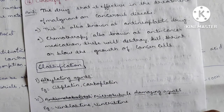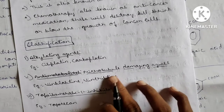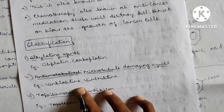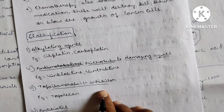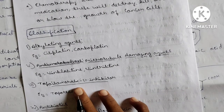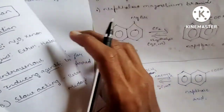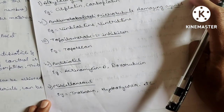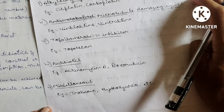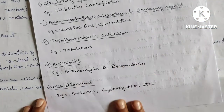Classification of anti-cancer drugs: Alkylating agents — example cisplatin, carboplatin. Microtubule-damaging agents — vinblastine, vincristine. Topoisomerase I inhibitors — topotecan. Antibiotics — actinomycin D and doxorubicin. Miscellaneous — tretinoin and hydroxyurea. These are the classifications with examples of anti-cancer drugs.